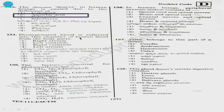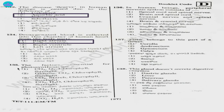Question 134. Deoxygenated blood is collected into this chamber of the human heart from the body parts: 1) right atrium, 2) left ventricle, 3) right ventricle, 4) left atrium. The answer is option 1, right atrium. Deoxygenated blood is collected in the right atrium.